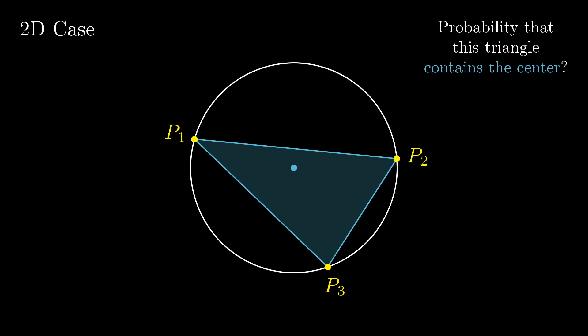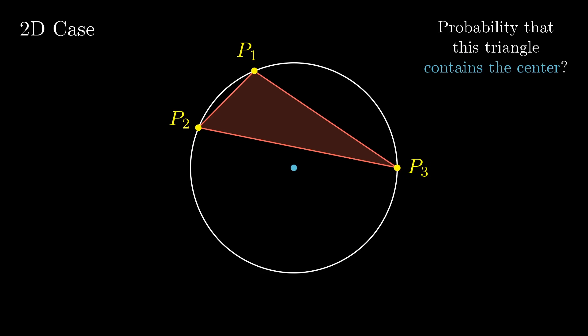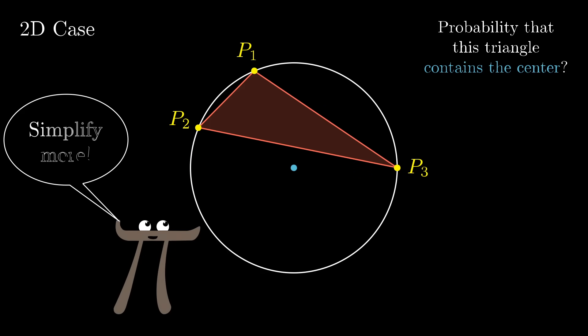I think you'll agree it's way easier to visualize now, but it's still a hard question. So again, you ask, is there a way to simplify what's going on, get ourselves to some kind of foothold that we can build up from?